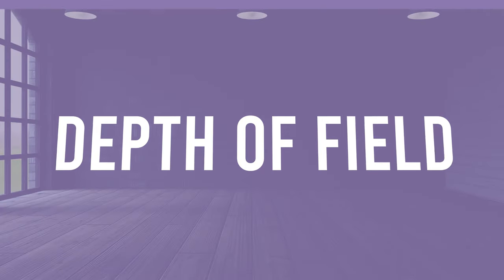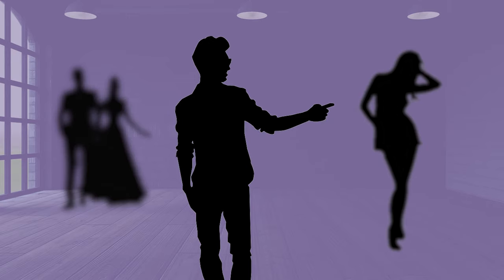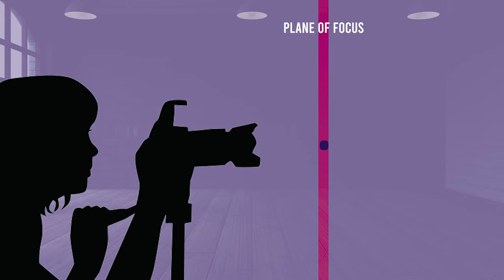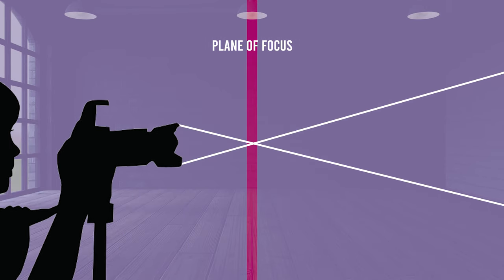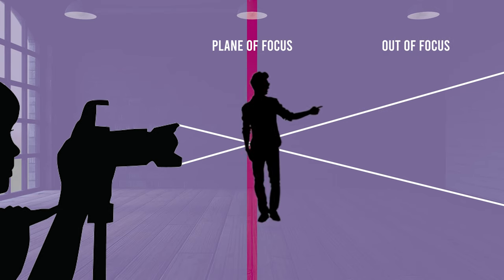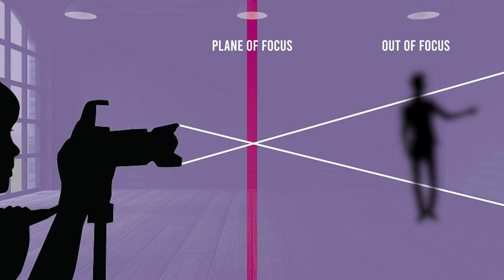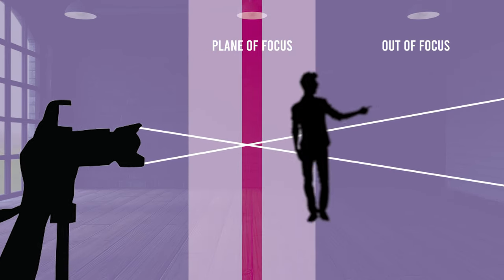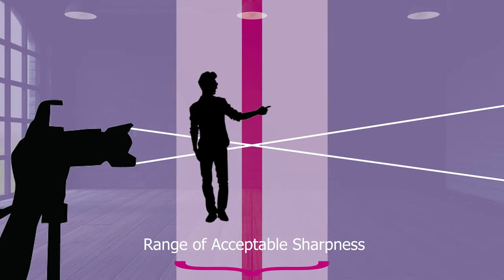So when we talk about depth of field, we're actually talking about what's in focus versus what's not in focus for an image or video. Now, technically, your camera can only focus sharply at one point or plane or distance from the camera at a time. This is essentially where the rays of light from a lens converge to form a clear and sharply defined image. And therefore, the further something is away from the plane of focus, the more blurry it becomes. But there also exists kind of a transition zone or range of acceptable sharpness of an image that will also appear to be in focus.